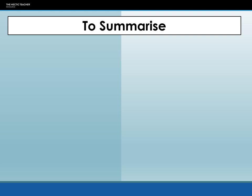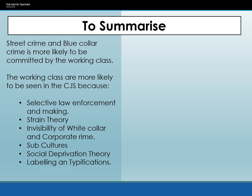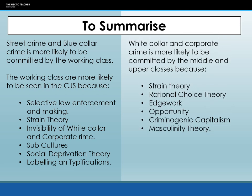To summarise: street crime and blue collar crime is more likely to be committed by working class people, which leads to working class people being seen in the criminal justice system more — because of selective law enforcement, strain theory, the invisibility of white collar and corporate crime, the subcultures and foci Miller referred to, social deprivation theory, and labelling and typifications. Whereas white collar and corporate crime is more likely to be committed by the middle and upper classes, because of strain theory, rational choice, edge work, opportunity, criminogenic capitalism, and masculinity theory.